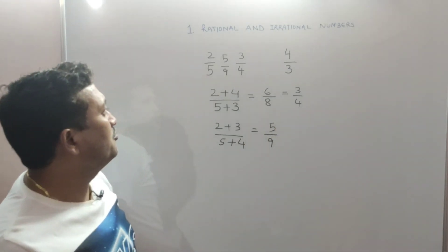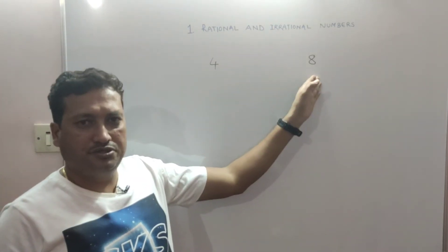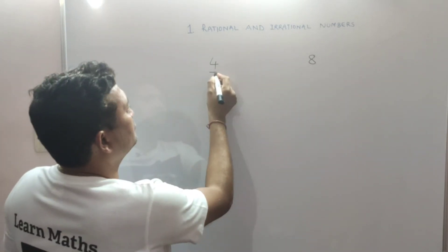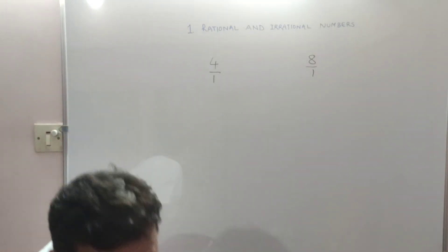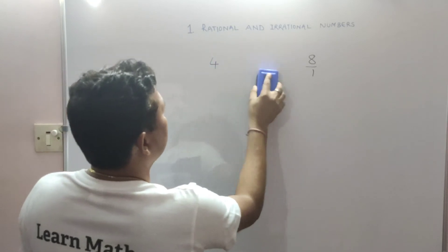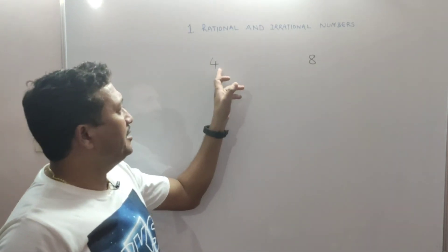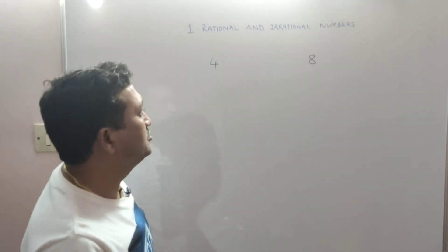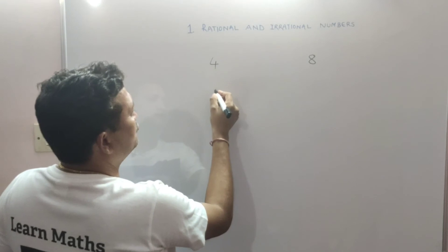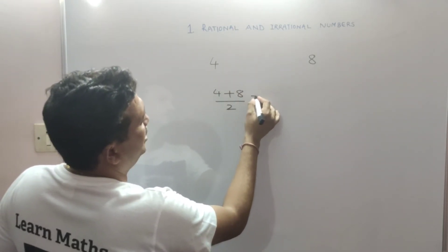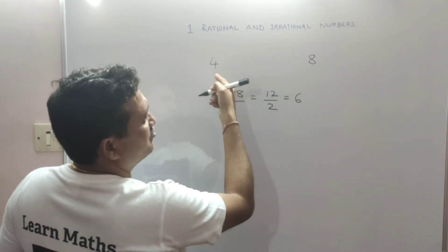Now suppose we have two rational numbers 4 and 8 — both have denominator 1. If the denominator is 1 and you want to find a rational number between 4 and 8, you need to add them and divide by 2, i.e., take the mean. So 4 plus 8 upon 2 is 12 upon 2, which is 6. Yes, 6 lies between 4 and 8.